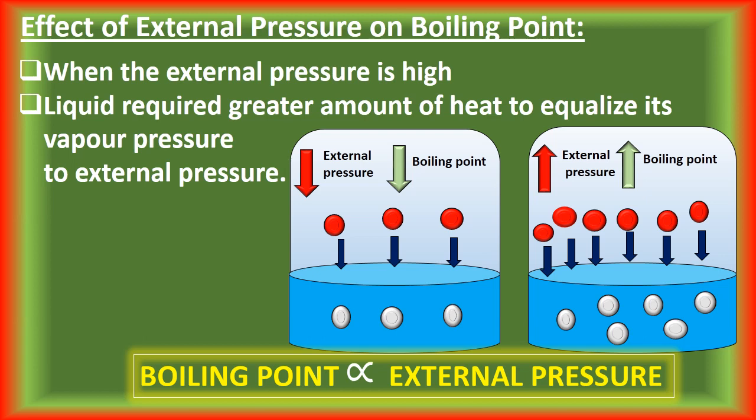Let's discuss the effect of external pressure on the boiling point. A liquid boils when its vapor pressure becomes equal to the external pressure. Thus, the boiling point is directly proportional to the external pressure. When external pressure is high, the liquid requires more heat to equalize its vapor pressure and thus boils at a higher temperature. Similarly, when external pressure is low, the liquid needs less heating and boils at a lower temperature.